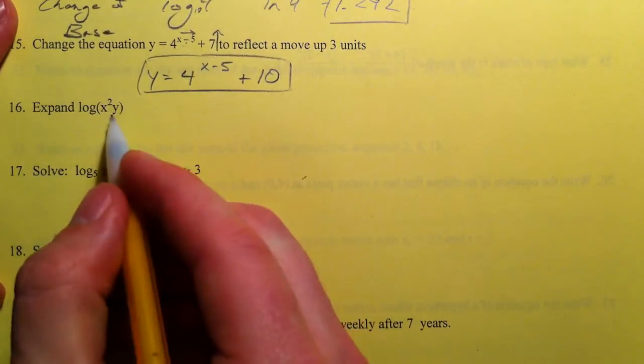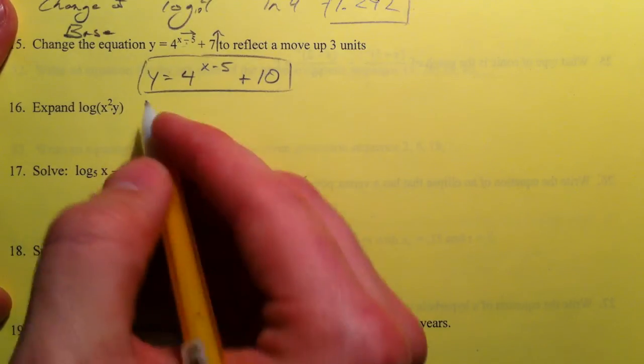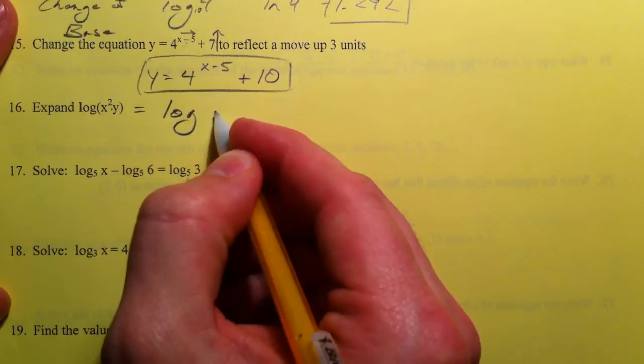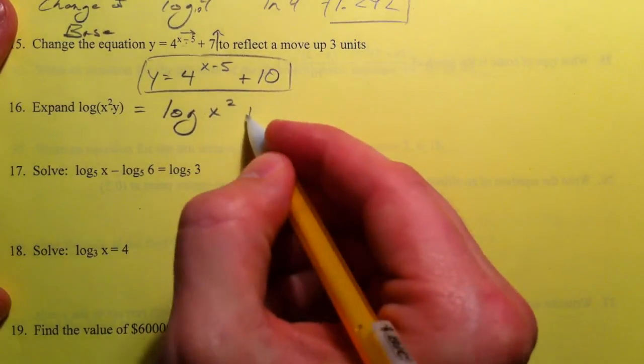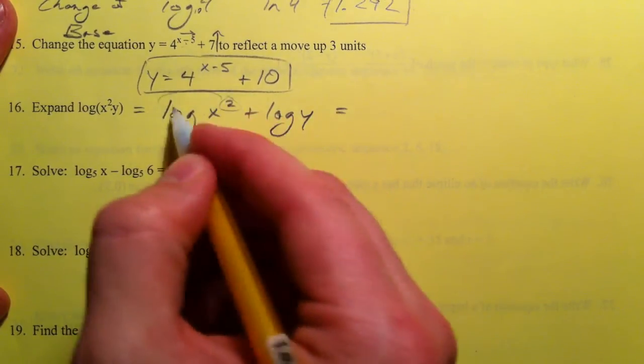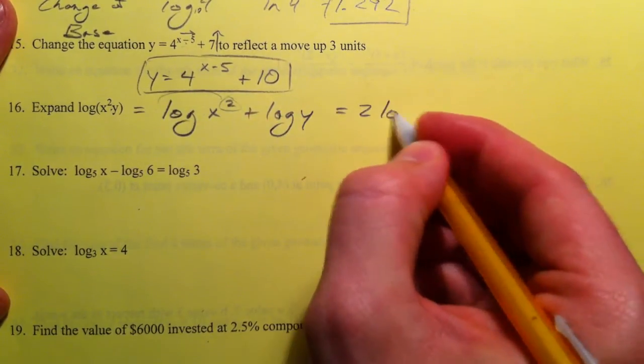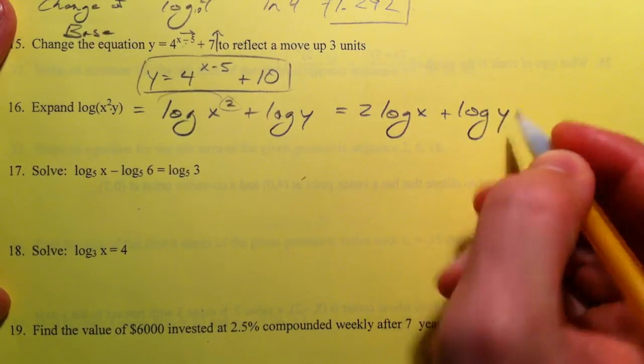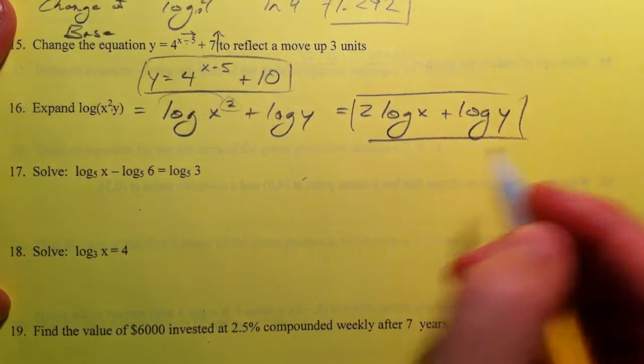Laws of logarithms. When you have two things that are multiplied, we separate them into two separate logs that are added. Fully expanded is when you bring the powers down in front. So 2 log of x plus log of y. And there you have it.